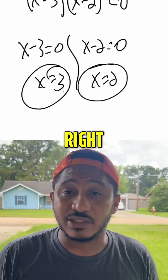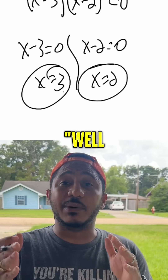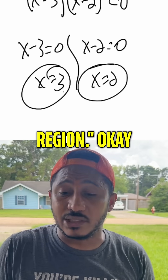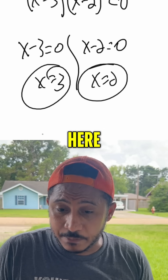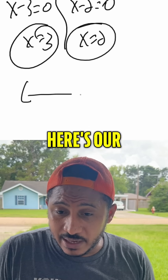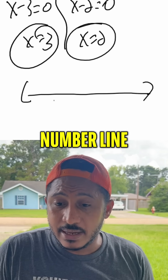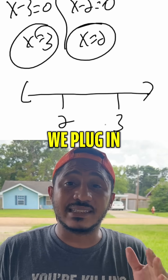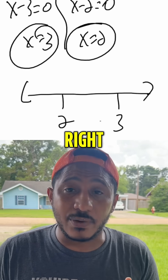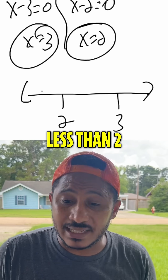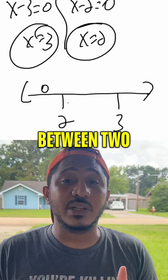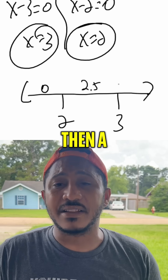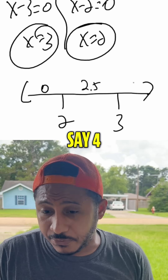But that was just us pretending. So we would say, take those numbers and put them on a number line, then plug in test points in each region. Here's our number line — here's 2, and here's 3. Now we plug in test points in each spot: give me a number less than 2, say 0; a number between 2 and 3, say 2.5; and a number bigger than 3, say 4.